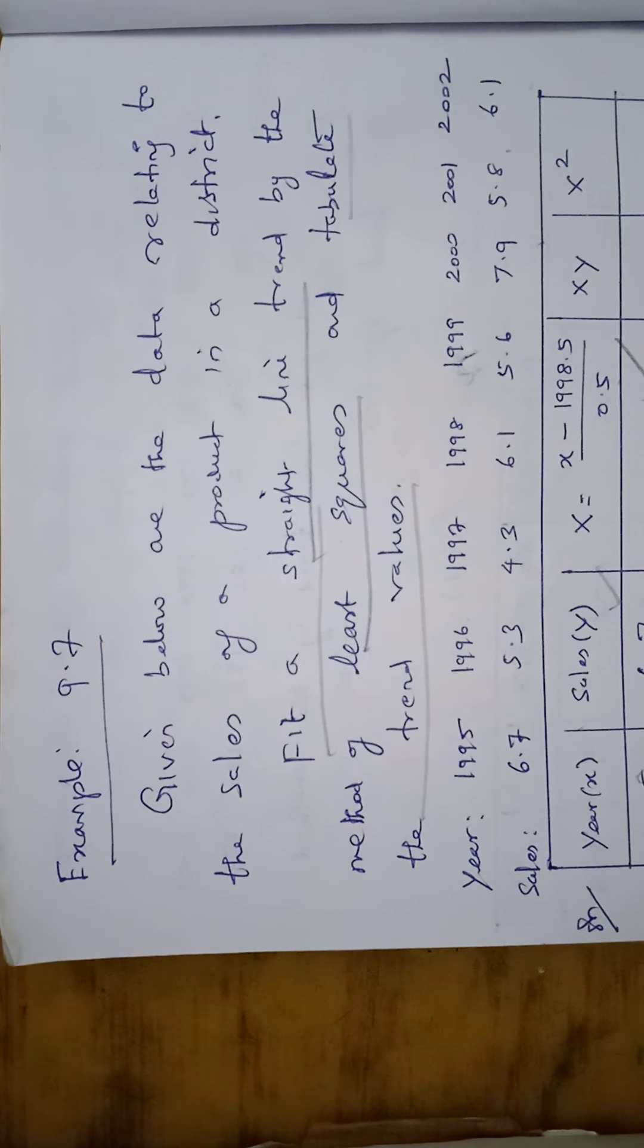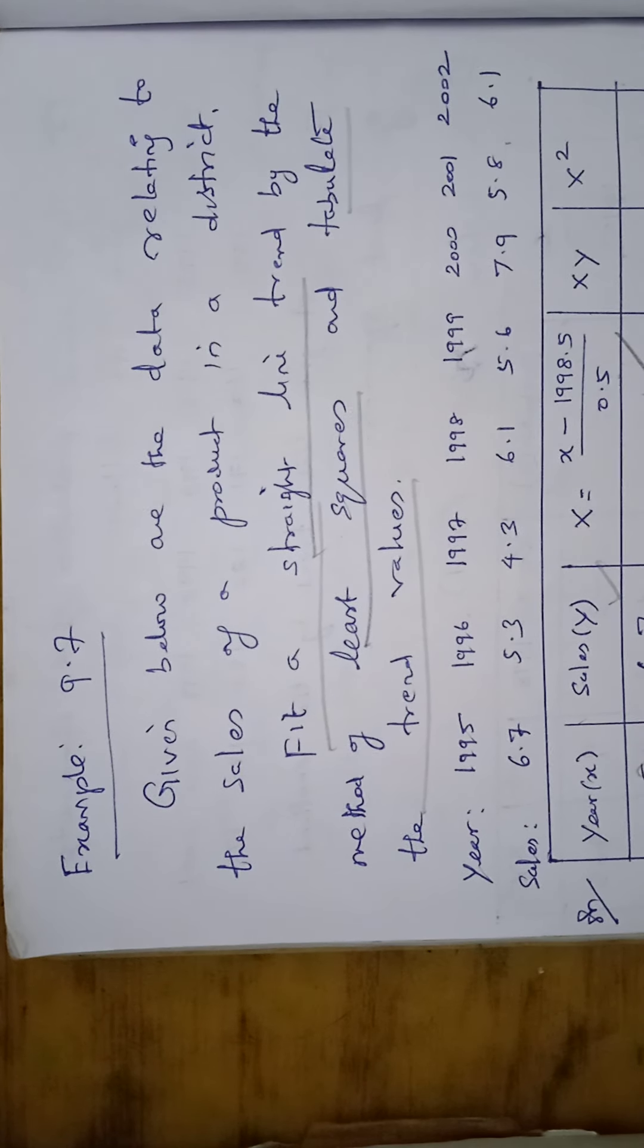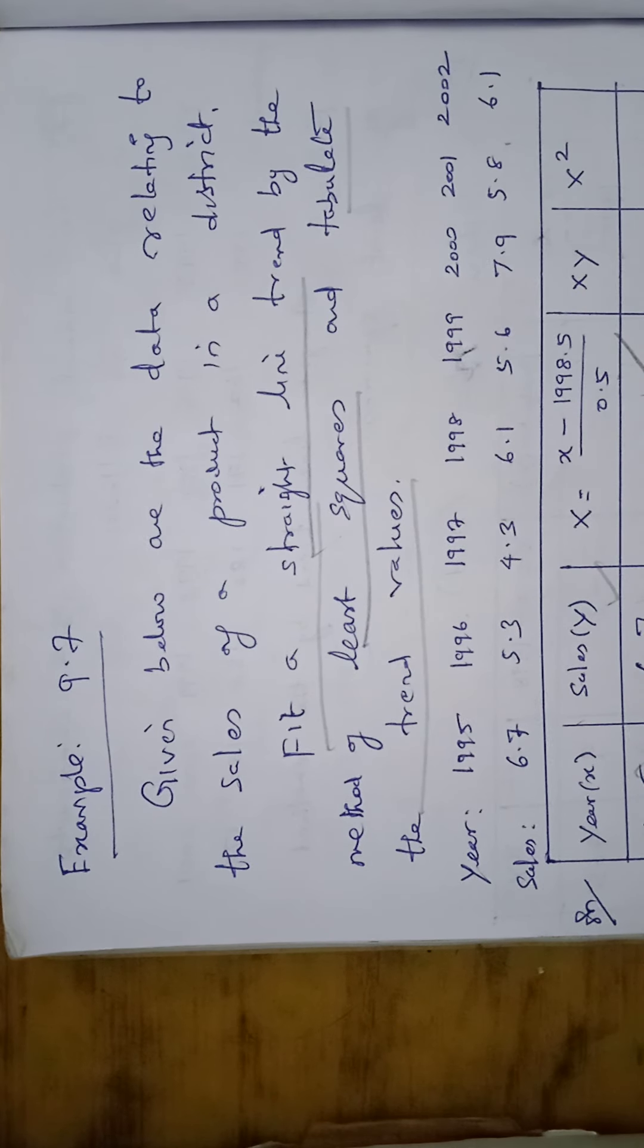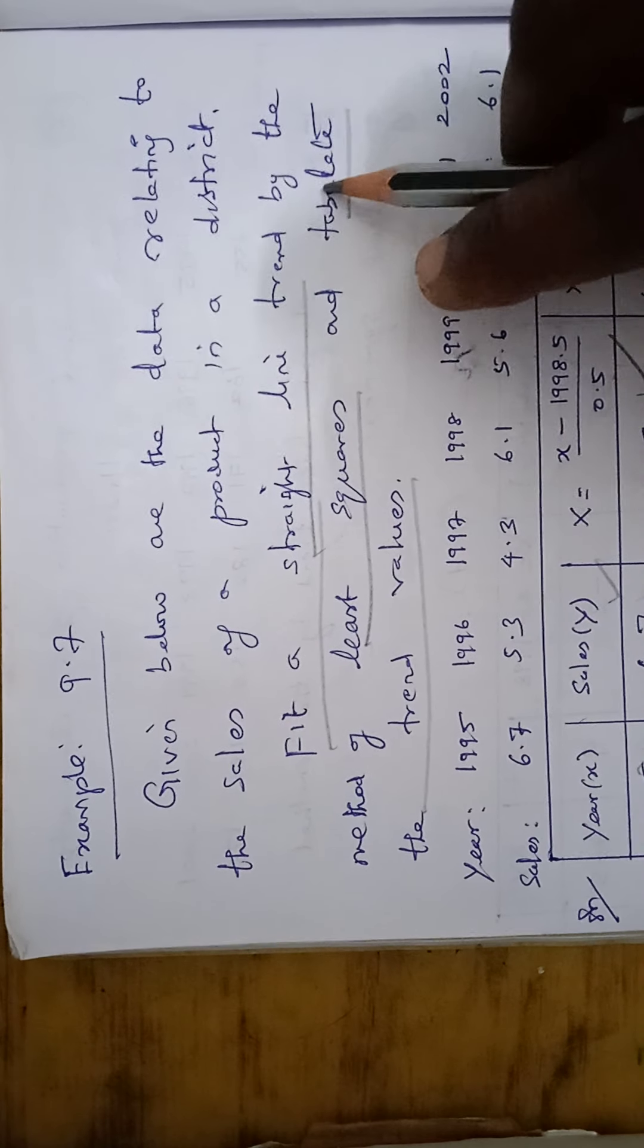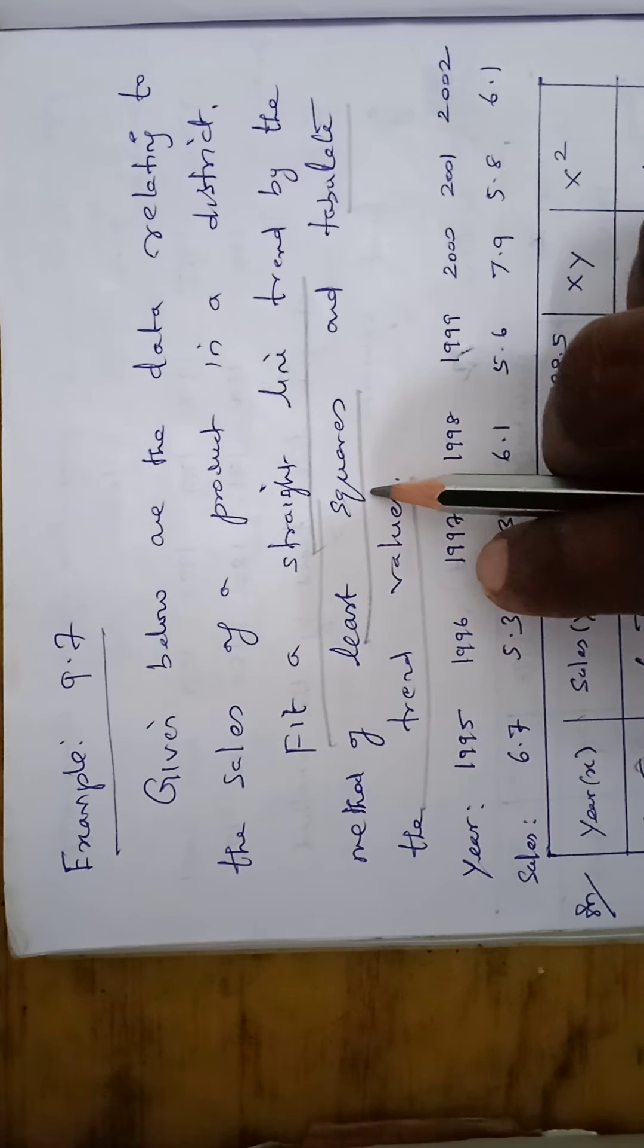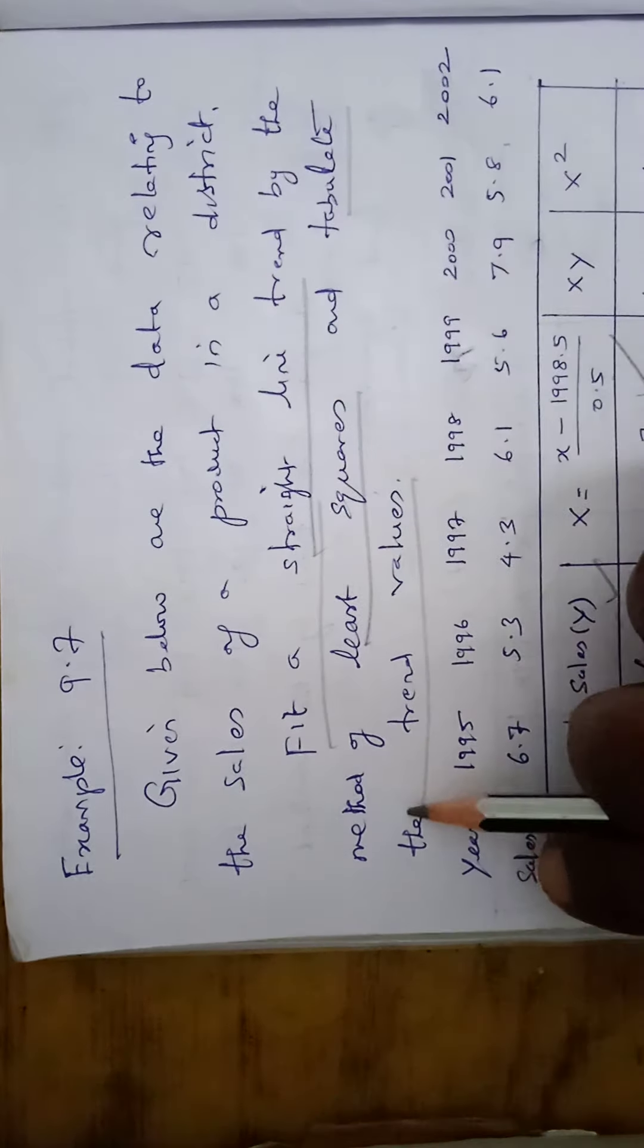Example 9.1. Given below are the data relating to the sales of a product in your district, fit a straight line trend by the method of least squares and tabulate the trend values.